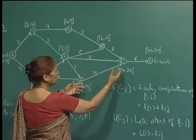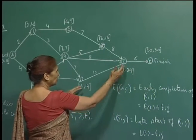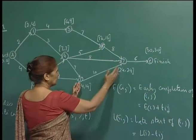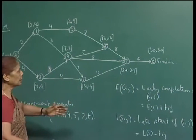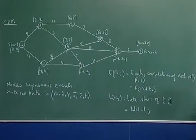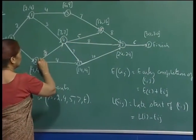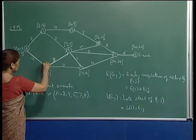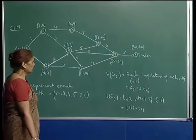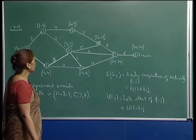To compute the critical path, you check which activities have the same early start and late start — those constitute the critical activities. The critical path came out to include nodes 4, 5, 2, 7, and so on, since each of them has the same early start and late start. Note that the network chosen here is slightly different from last time.